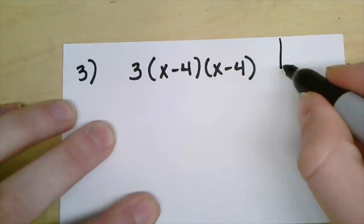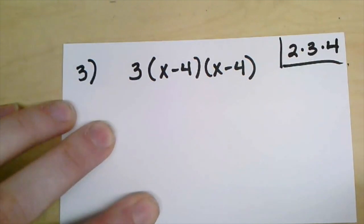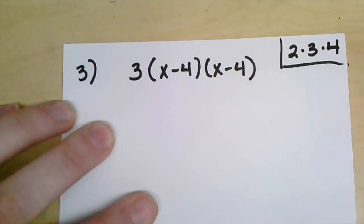Well let's think about this quick example over on this side. If I want to multiply 2 times 3 times 4, does it matter which order I multiply them in? Let's check.